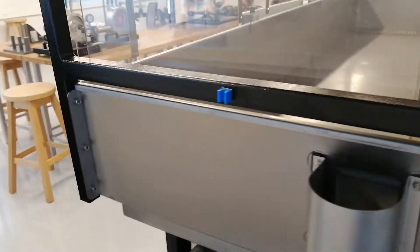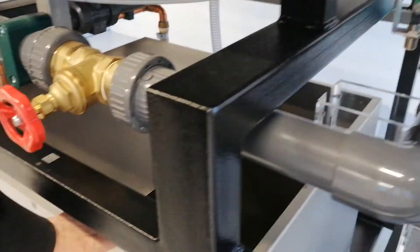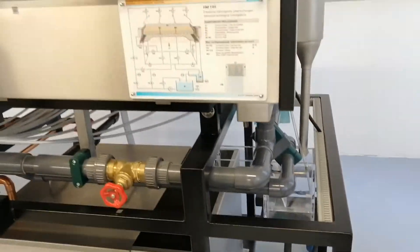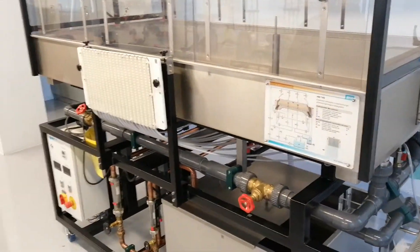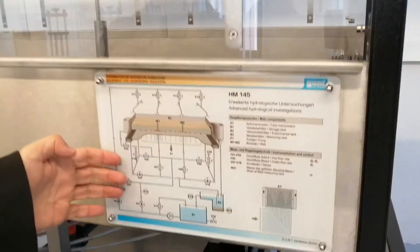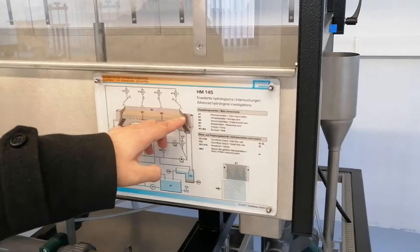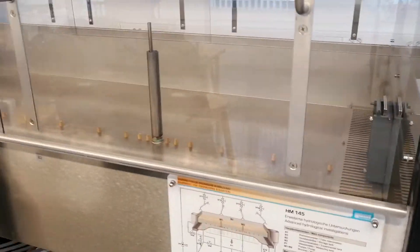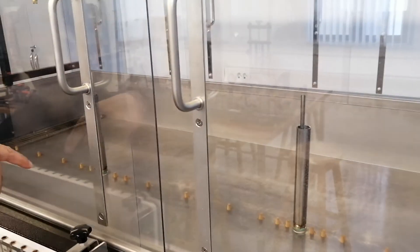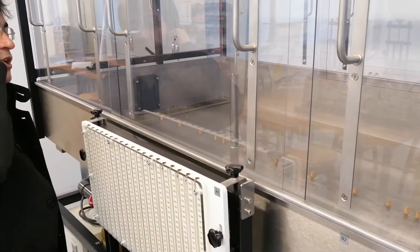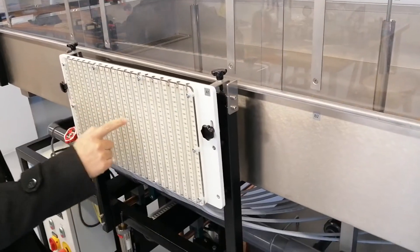Here you see our main tank. Water will come from here and also return back to that. You can also see here there is an explanation about the device. You see the soil here, and two wells. We have two wells and several measurement devices there, and we can measure and observe using them.